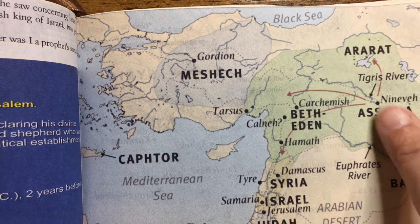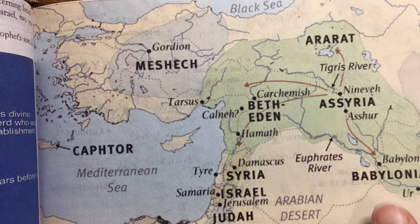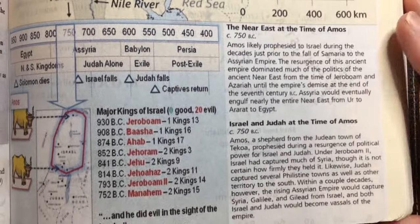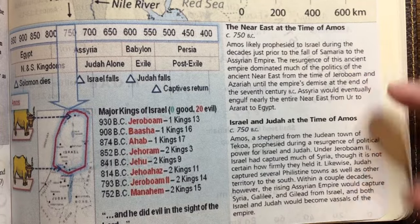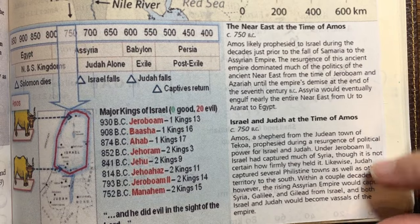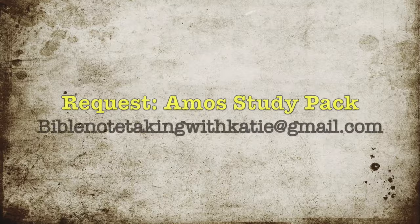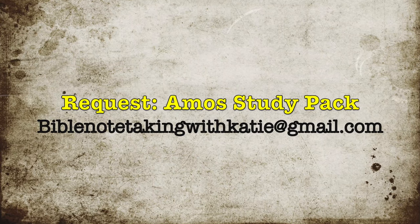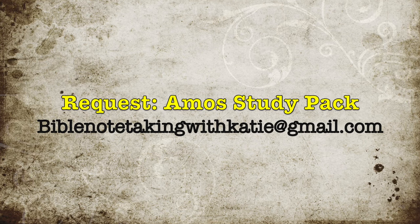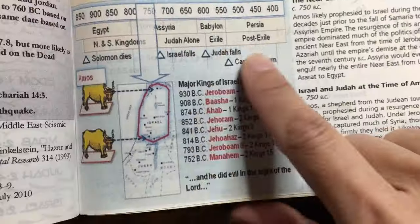I found a set of two maps. This one shows the Assyrian conquest coming down — you can even see Babylonia. What was neat is that each map had little write-ups next to them, so I cropped them to appear underneath so I could still have that information to study later. Just send me an email at BibleNoteTakingWithKatie@gmail.com and you can get any of these inserts for free — just let me know you want the Amos study pack.